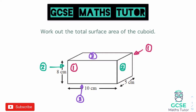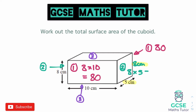Starting with face number one, the width and length are eight and ten, so the area is eight times ten which gives us 80. That's the same on the back, so both are 80. Moving on to the green rectangle — face number two — the length along the bottom is five and the height of the cuboid is eight centimeters, so we do five times eight which gives us 40. Again that's the same on the other side, so both are 40.